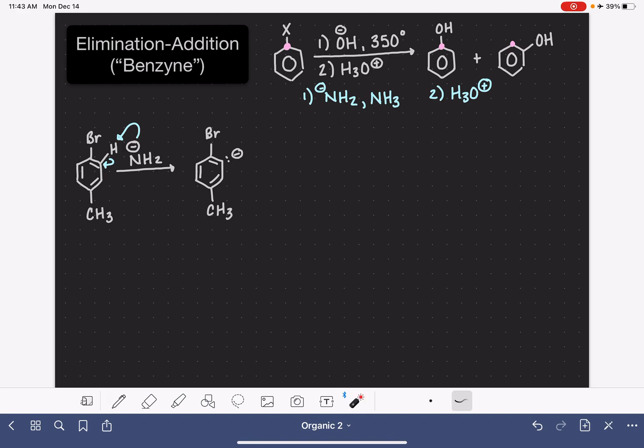And so this is like the step one of the elimination reaction. We've grabbed that hydrogen, and then the next thing that's going to happen is that those electrons are going to be coming in to make a triple bond. So we're going from a double bond to a triple bond, and we're kicking off the bromine, getting rid of our leaving group.